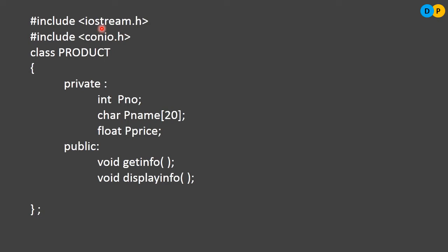Let us start with the program. As usual, we will be including the header files in the beginning. The first header file is iostream.h followed by conio.h. First, we need to declare the class. We will be starting with the keyword class followed by the class name. Here the class name is product. Within the pair of curly braces, the complete class body will be kept. The class will be having three data members kept in private access specifier: product number, product name, and product price. To work on these data members, we have considered two member functions, get info and display info, kept in public access specifier.